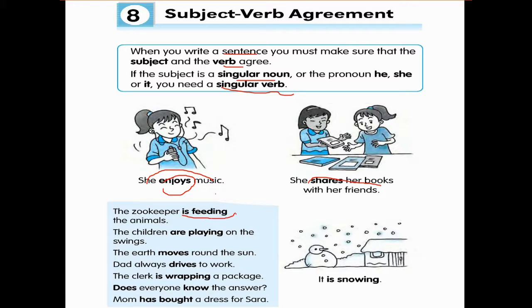The zookeeper is feeding. Children are playing on the swings, the earth moves around the sun, dad always drives to work, the clerk is wrapping a package, doesn't even know the answer. Mom has bought a dress for Sarah and it is snowing.